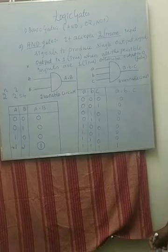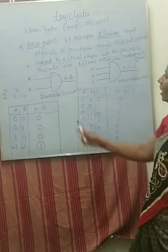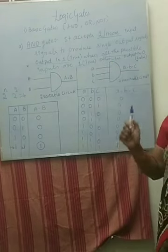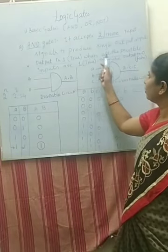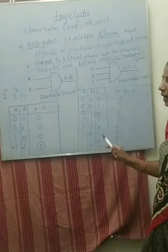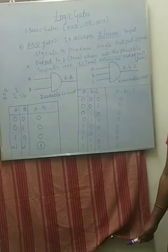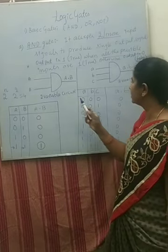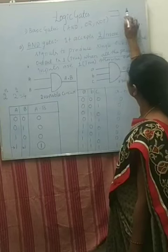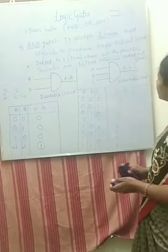So that is the AND gate. AND performs logical multiplication. It is a basic gate that accepts two or more input signals to produce a single output. Output is true (1) when all possible inputs are 1; otherwise the output is 0. For the circuit diagram, it looks like the letter D — please write the inputs in between and do not draw it incorrectly.